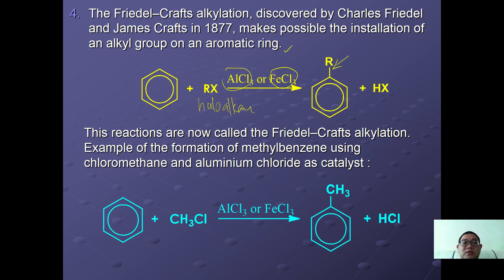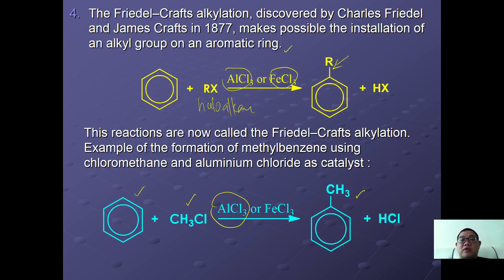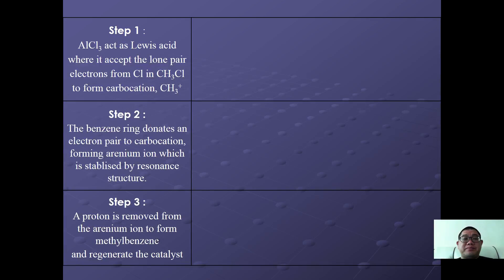An example is the formation of methylbenzene using aluminium chloride as catalyst: benzene reacts with chloromethane under AlCl3 as catalyst to form methylbenzene (toluene) plus HCl as a side product.